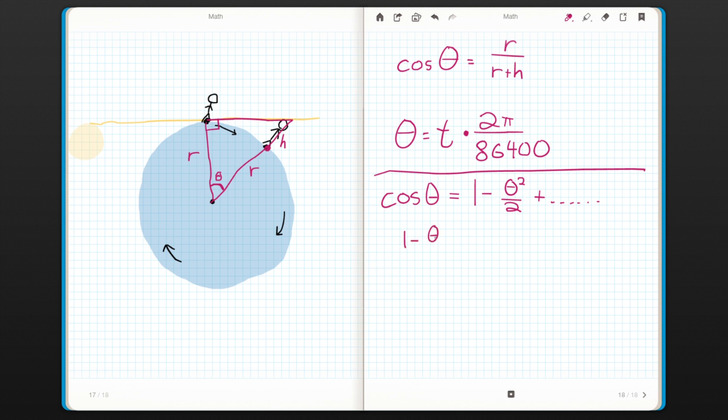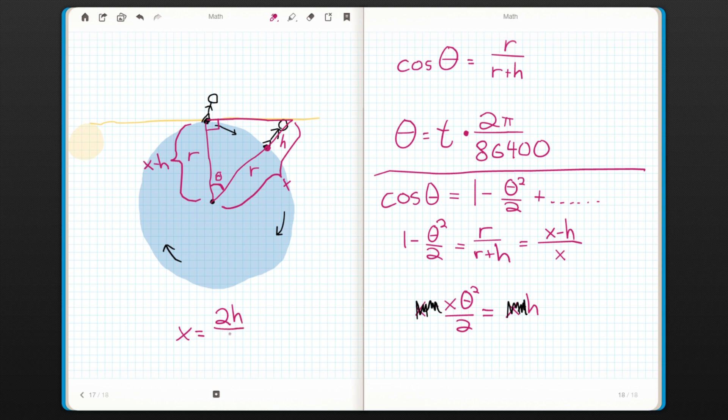Plugging that into our original equation gives us 1 minus theta squared over 2 equals r over r plus h. I also don't like this ugly denominator, so I'll define a new variable x to be the entire length of the hypotenuse, r plus h. That means that the other side, the adjacent side, is x minus h. Now instead of r over r plus h, I have x minus h over x. Now we just have to do some algebra and solve for x. We'll multiply each side by x, giving us x minus x theta squared over 2 equals x minus h. We can subtract x from both sides to get rid of two of the x's, and then multiply the whole thing by negative 1 to get rid of the minus signs.